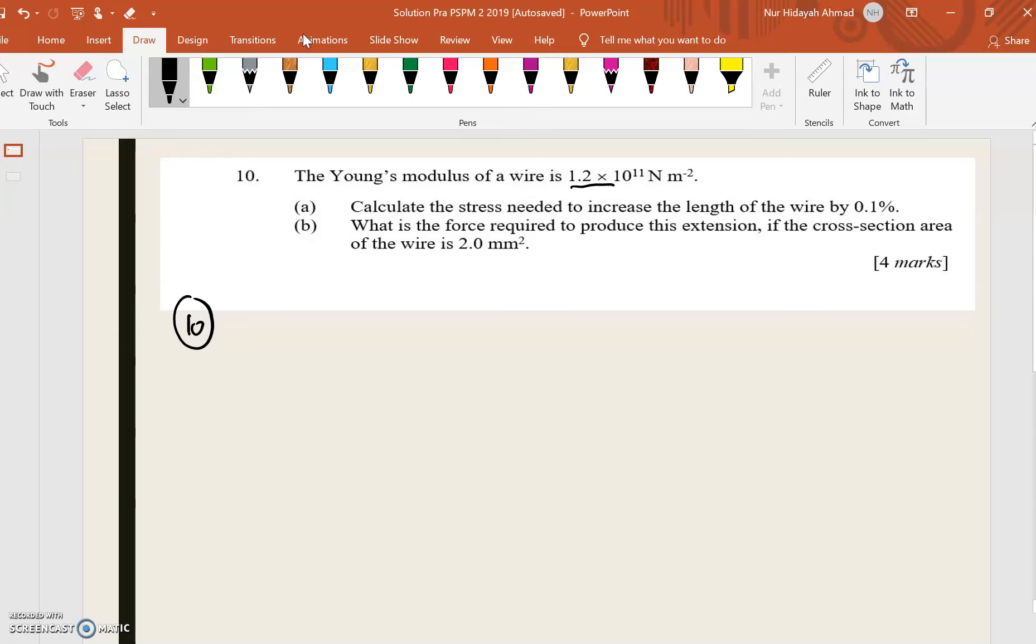So the Young's modulus of wire is 1.2 times 10 power of 11, so given that Y is 1.2 times 10 power of 11 newton per meter square. So question A asks to find the stress needed to increase the length of the wire by 0.1%.